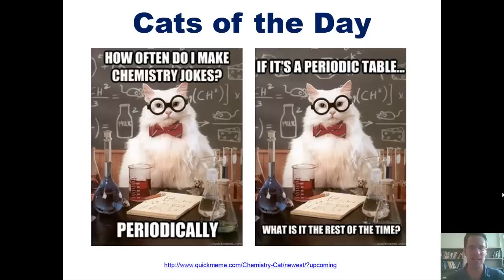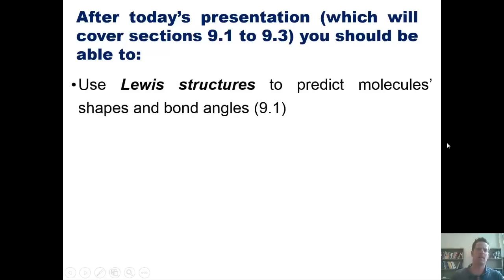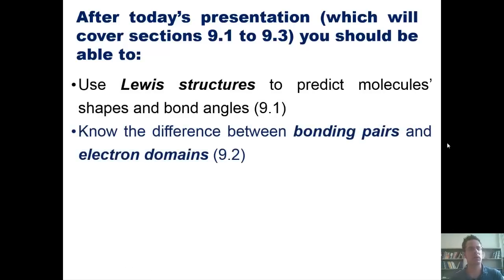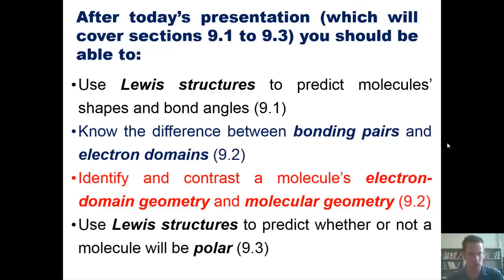Now I'll introduce you to today's lineup. After this lecture or series of presentations, which will cover sections 1 through 3 of chapter 9, you should be able to do the following: First, use Lewis structures to predict molecules' shapes and bond angles. Second, know the difference between bonding pairs and electron domains. Third, identify and contrast a molecule's electron domain geometry with its molecular geometry. And fourth, use Lewis structures to predict whether or not a molecule will be polar.